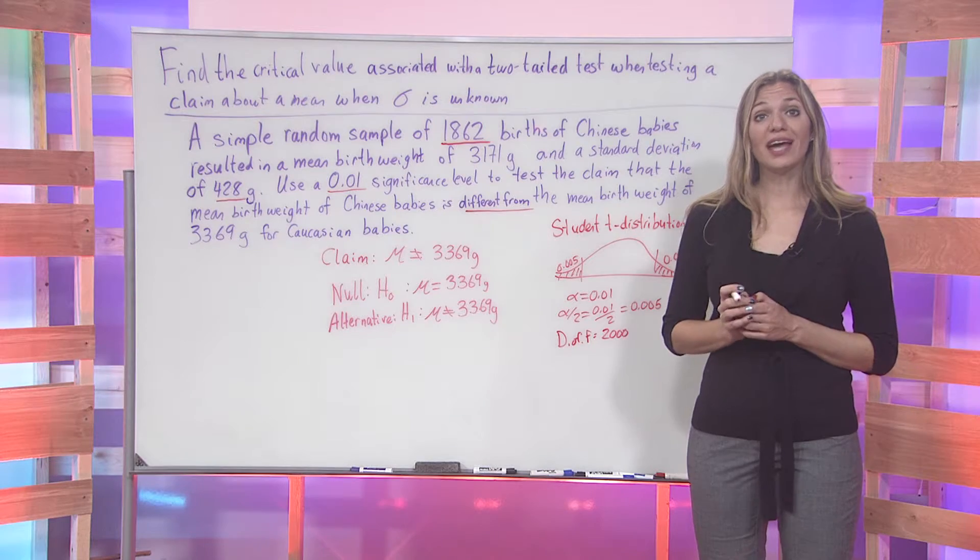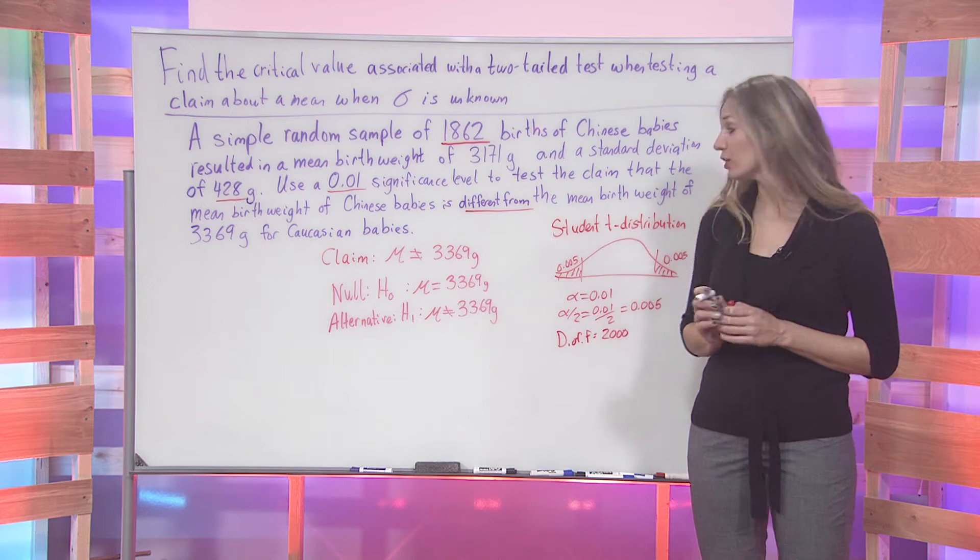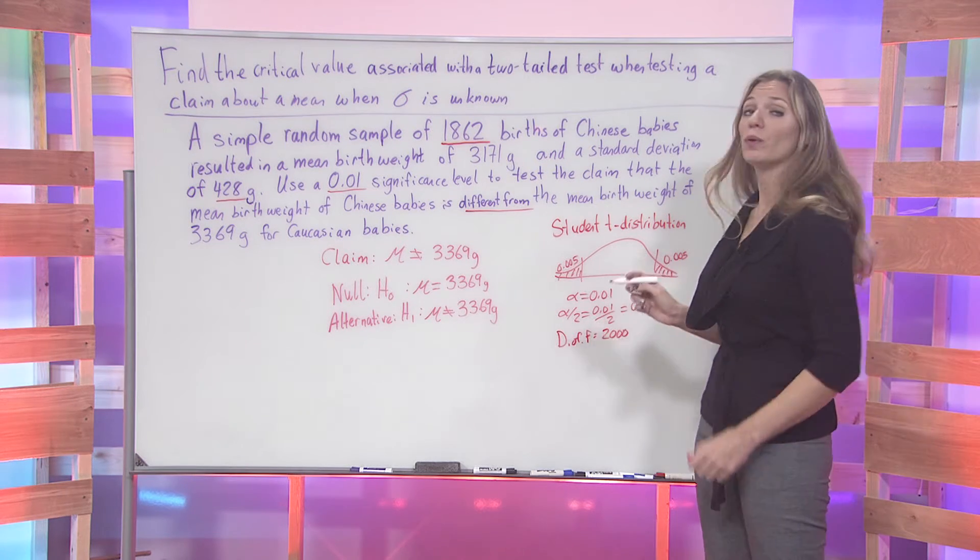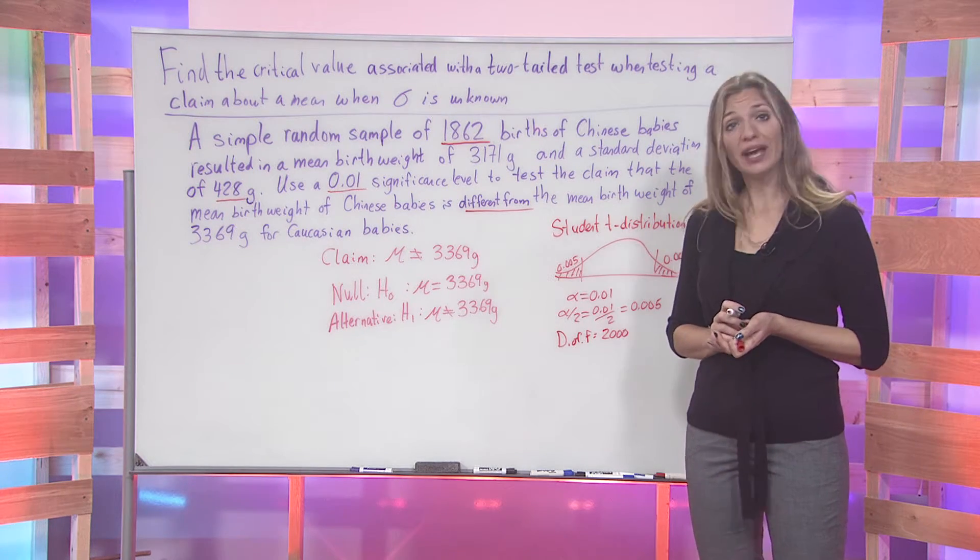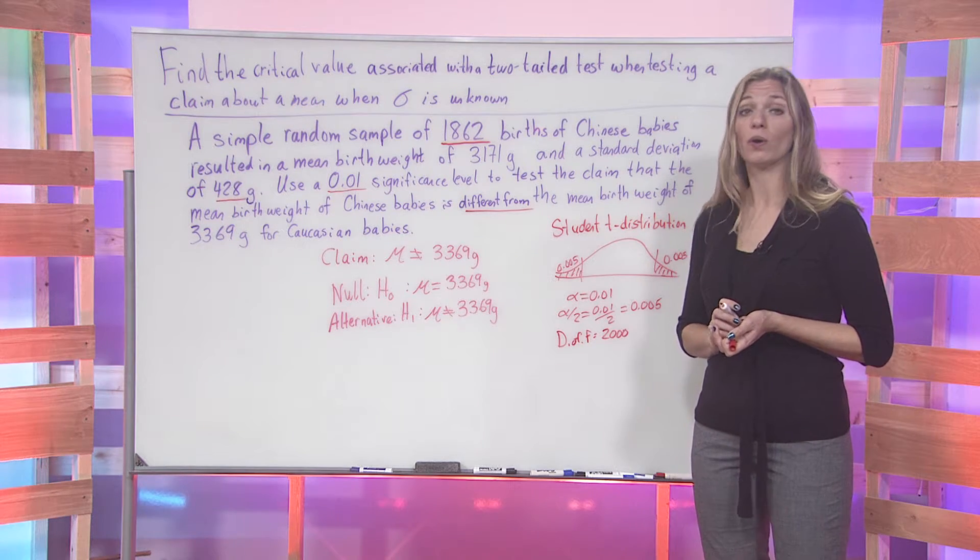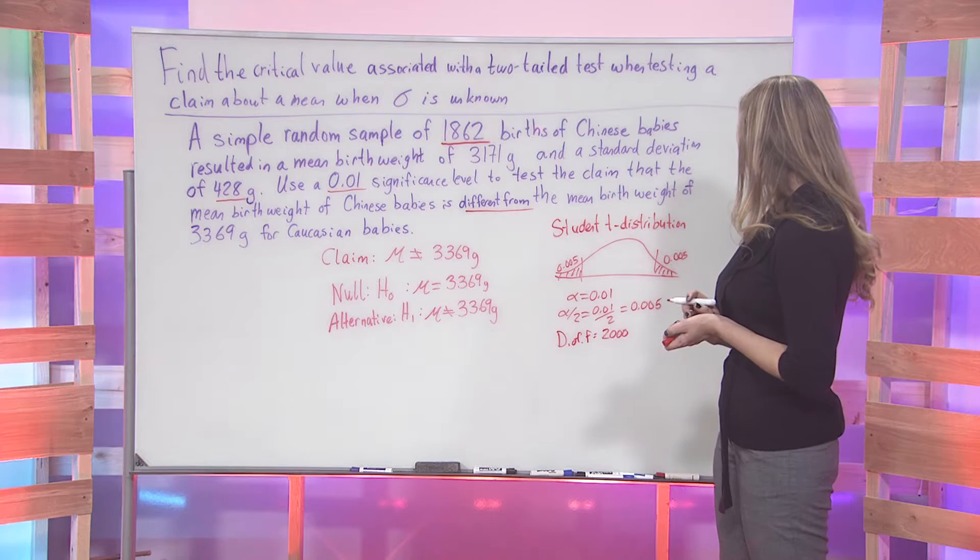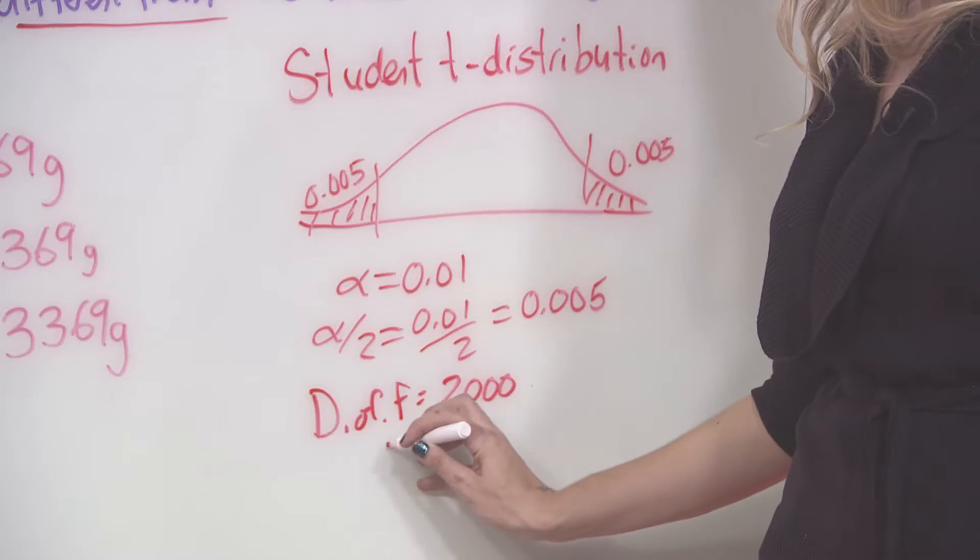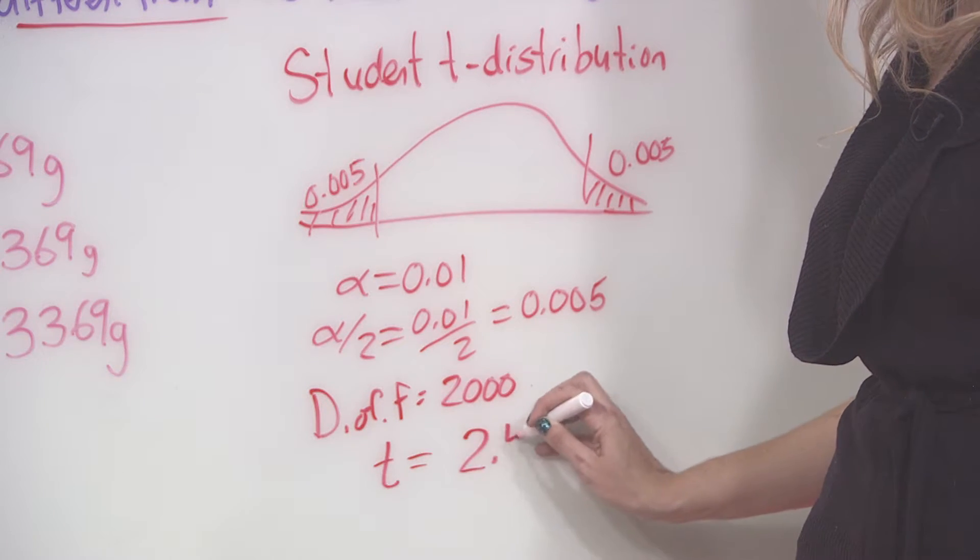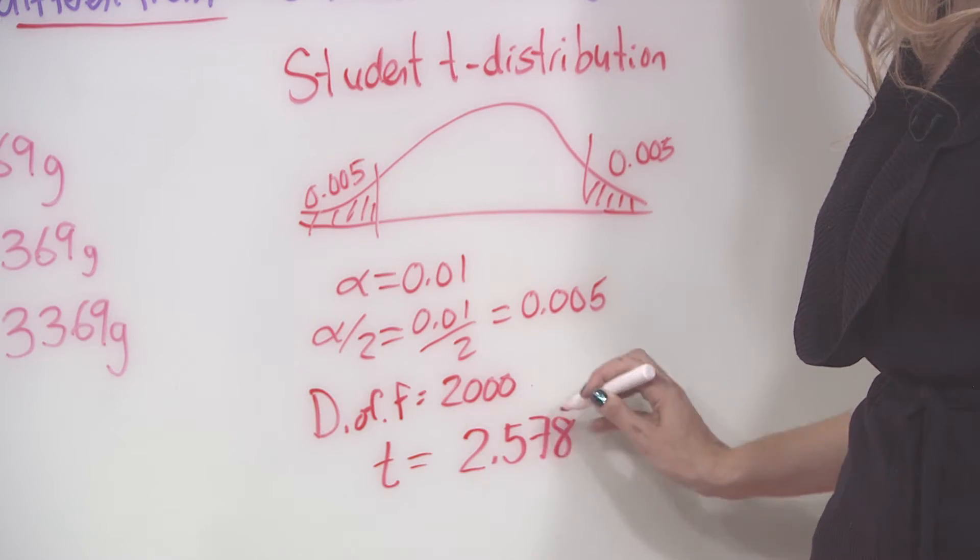Looking at 2,000 and the area under the curve being 0.01, we want to look at the area in two tails being 0.01 or in one tail being 0.005. Thus, we see that we are given a t-score equivalent to 2.578.